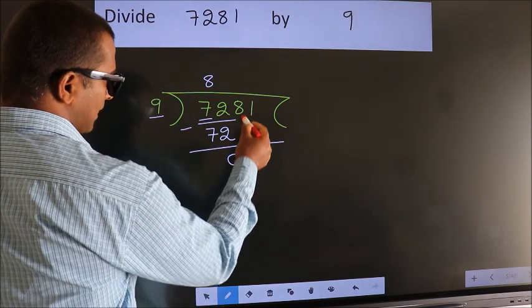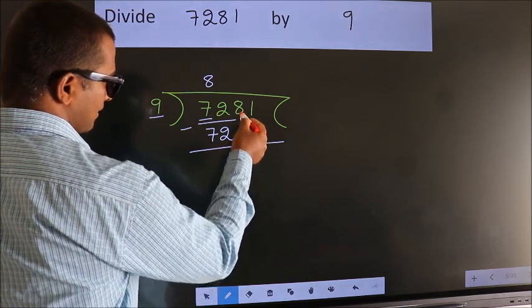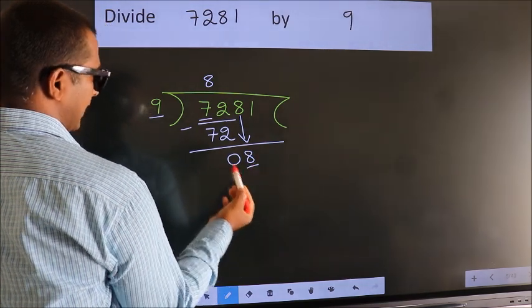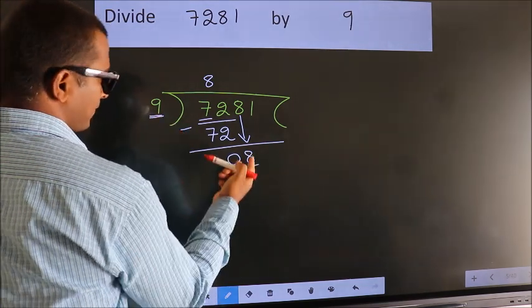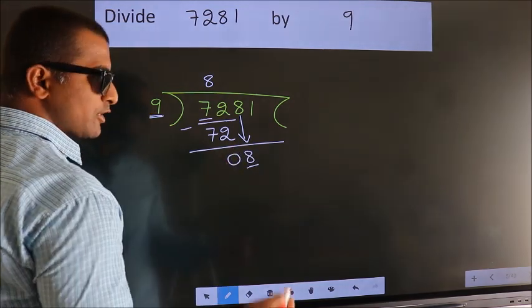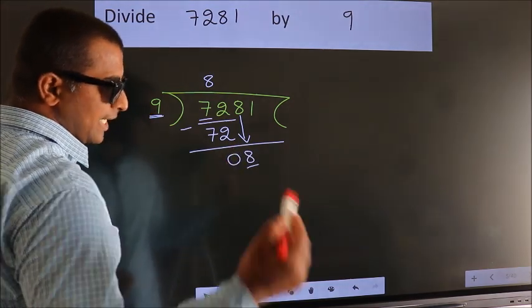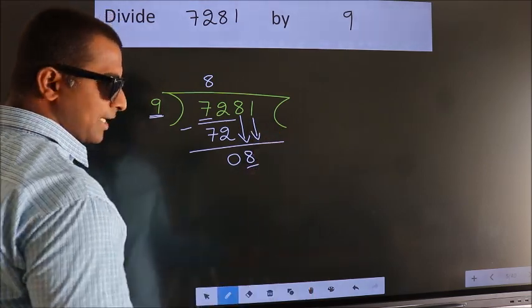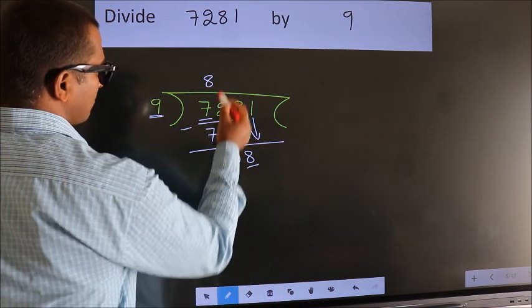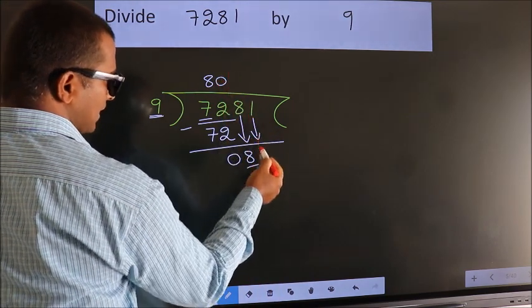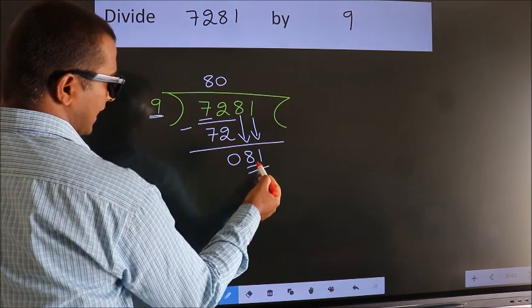After this, bring down the beside number. So 8 down. Here we have 8, here 9. 8 is smaller than 9, so we should bring down the second number. The rule to bring down the second number is to put 0 here. Then only we can bring down this number. So 81.